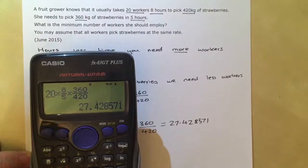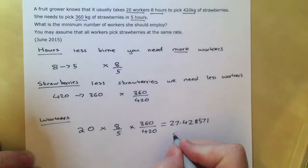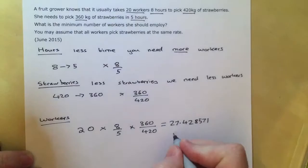It's good practice in an exam to always write down the full decimal as it appears on the screen. Now the question's asking us for the minimum number of workers she should employ. Now it's tempting in this case to always round down, but because we want the minimum, if there were 27 workers, we wouldn't have enough. So in this sort of situation, we would always round up to the next number. So we would need 28 workers.